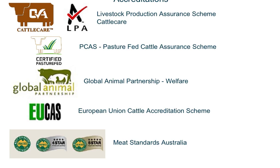Accreditations are an important market specification for some markets. Meat Standards Australia (MSA) is the program for grading beef on meat-eating quality, allowing use of the MSA label. You need to be registered with Livestock Production Assurance (LPA) first. LPA, also known as Cattle Care, is an on-farm quality assurance program where producers must meet minimum industry standards for beef production, providing access to markets. Auditing occurs annually, and you can sometimes receive a bonus for participation.